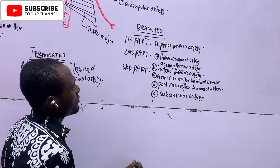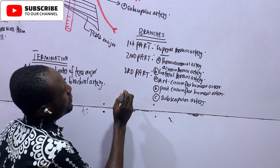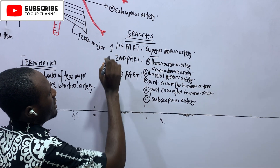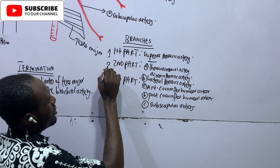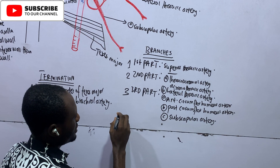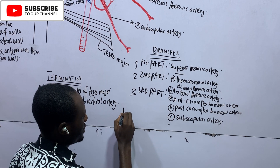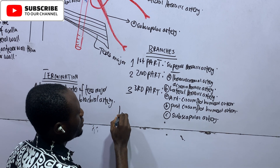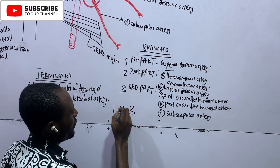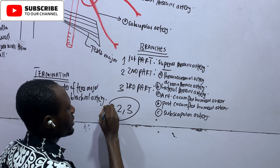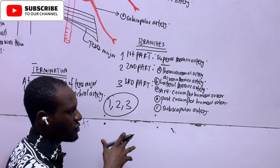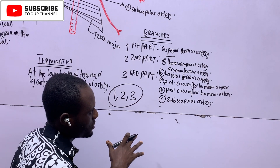There is a simple rule here: the first part gives rise to one artery, the second part to two arteries, and the third part to three arteries. So remember the rule of one, two, three for the parts of the axillary artery. Very important.